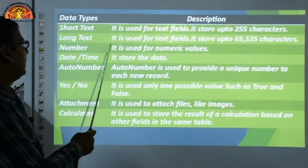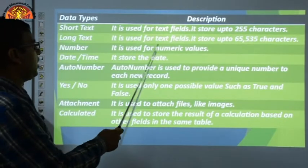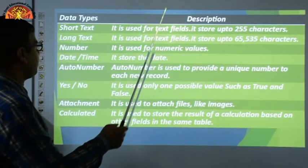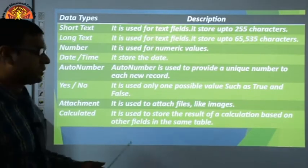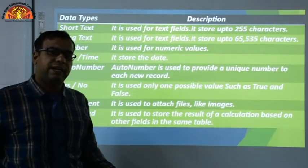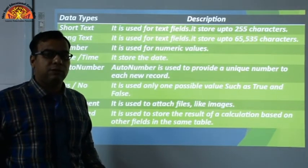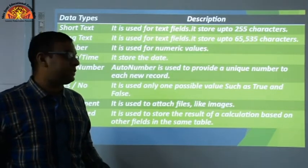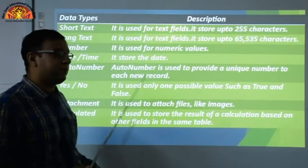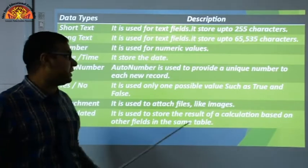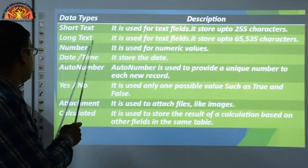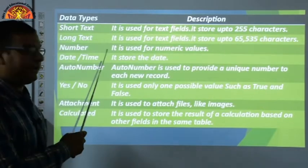Next is Number. It is used for numeric values. For example, roll number is numeric, so the data type for roll number would be Number. Select Number for any column that will store numeric data.